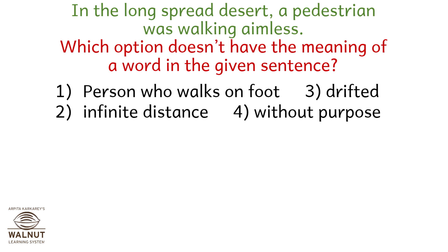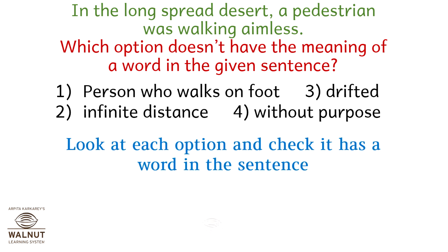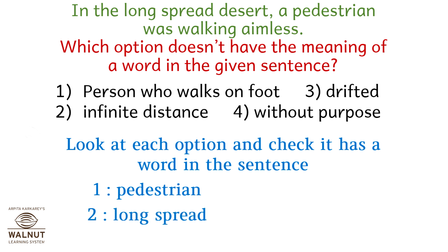In the long spread desert, a pedestrian was walking aimless. Which option doesn't have the meaning of a word in the given sentence? Option 1: pedestrian is a person who walks on foot. Option 2: drifted — long spread. Option 3: infinite distance. Option 4: without purpose — aimless. Option 3 seems to be the correct answer. That brings us to the end of the comprehension language section.